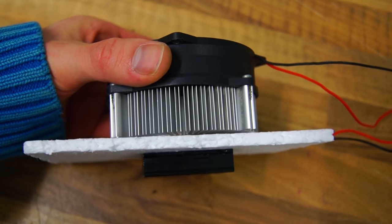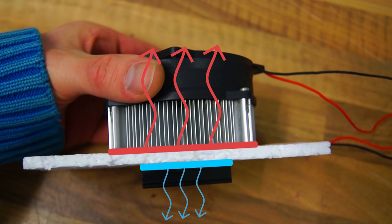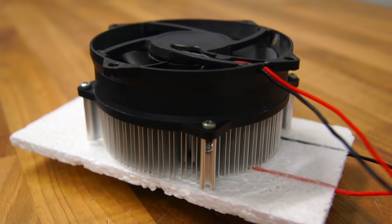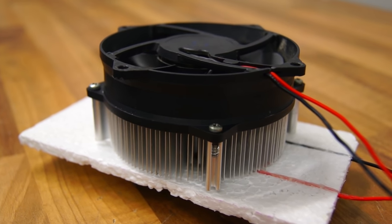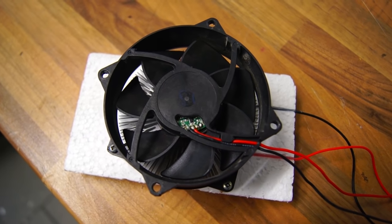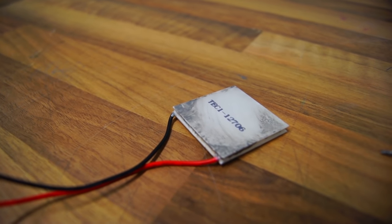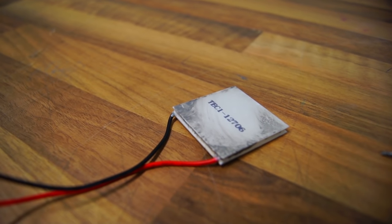The key to reach these low temperatures is to remove as much heat as possible on the hot side. You can do this by using a large heat sink and a powerful fan to dissipate the heat. Using a high quality Peltier module will also increase the performance. Links down below.